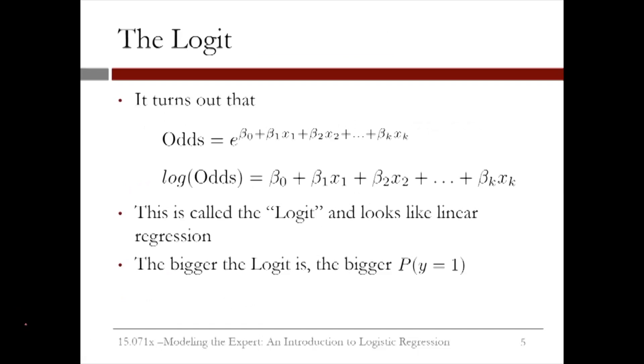If you substitute the logistic response function for the probabilities in the odds equation on the previous slide, you can see that the odds are equal to e raised to the power of the linear regression equation. By taking the log of both sides, the log odds, or what we call the logit, looks exactly like the linear regression equation. This helps us understand how the coefficients, or betas, affect our prediction of the probability. A positive beta value increases the logit, which in turn increases the odds of 1.